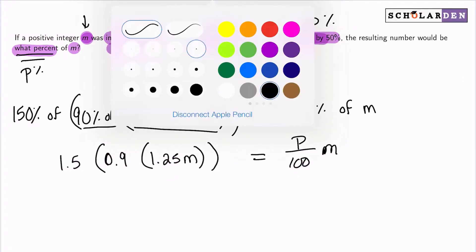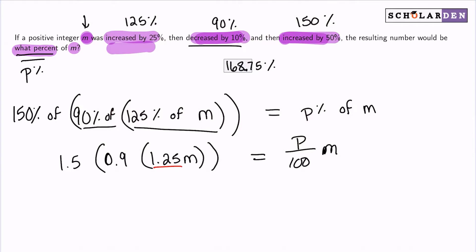So what we're going to do is multiply all of our coefficients together here. I'll use red. 1.25 multiplied by 0.9 multiplied by 1.5. I'll grab my calculator here. And that gives us 1.6875m. And remember that's supposed to be equal p over 100 multiplied by m.